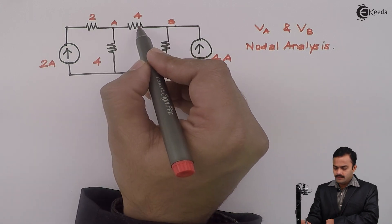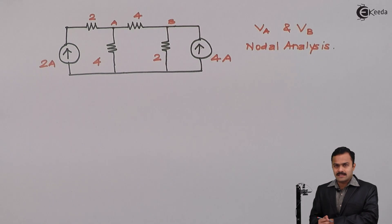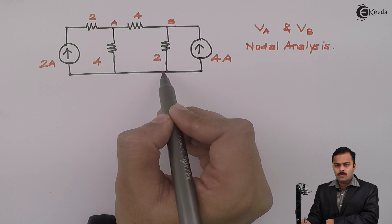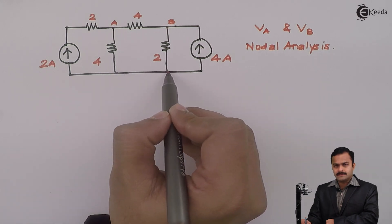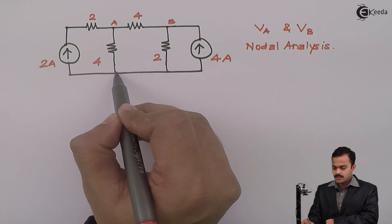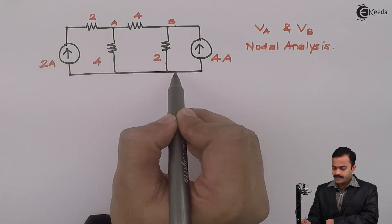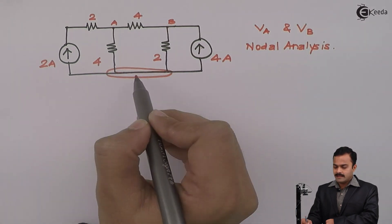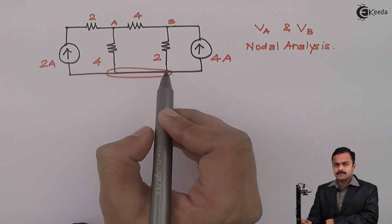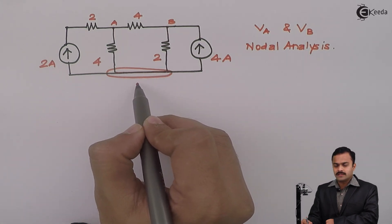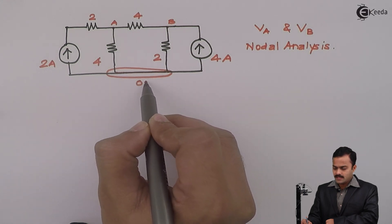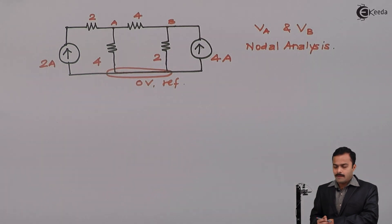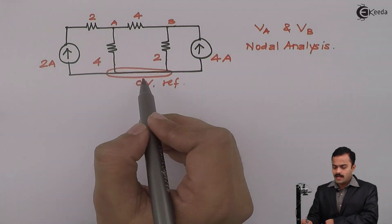Node B also has three branches connected together, so this is the second node B. Here I don't have any element present between these two points, so these two points are the same and I consider this one point as a reference, meaning it will have voltage 0. In all, I am having three nodes, out of which one is taken as a reference.